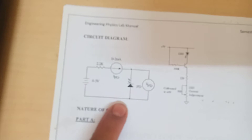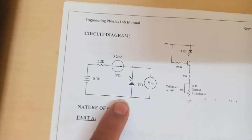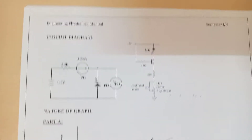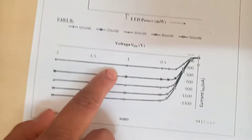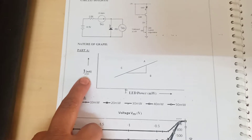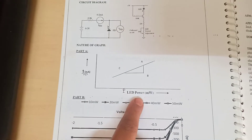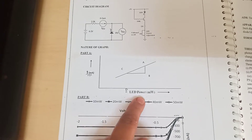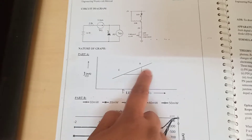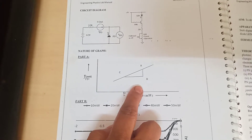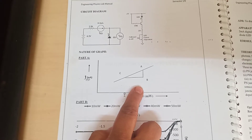This is the circuit diagram to find out the photodiode characteristics and also the power responsivity. These are the two graphs we are going to plot. From the first graph, that is IPD — current across the photodiode — versus PLED — power across the photodiode — the graph will be a straight line, and using its slope we are going to find out the responsivity.